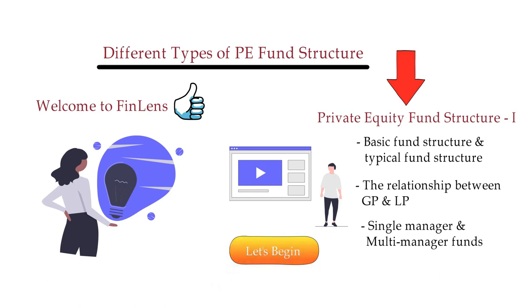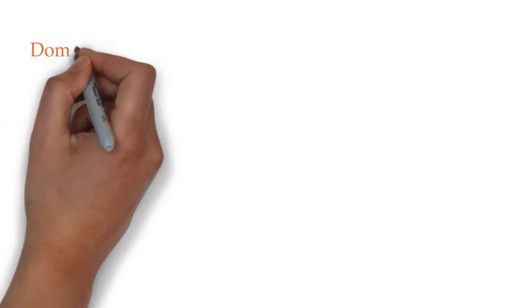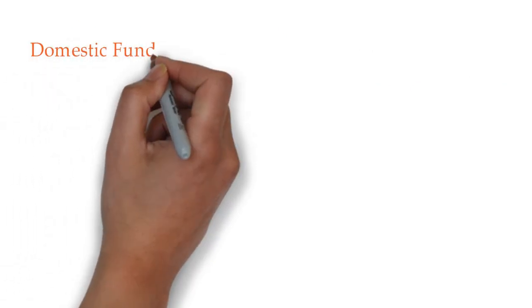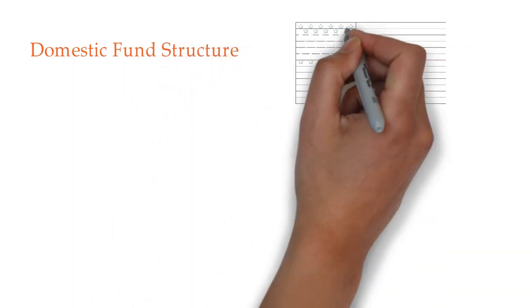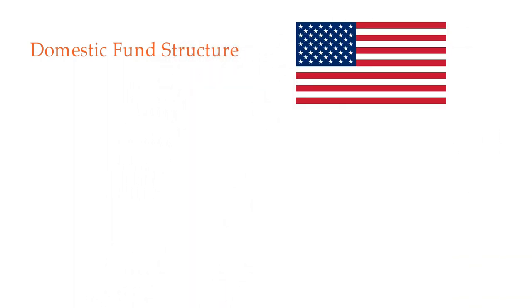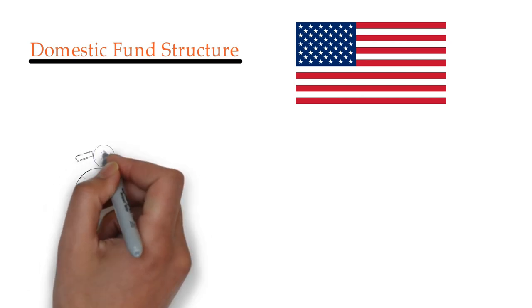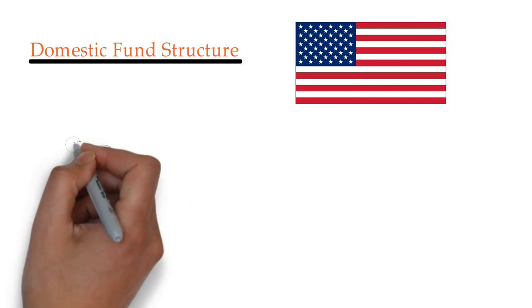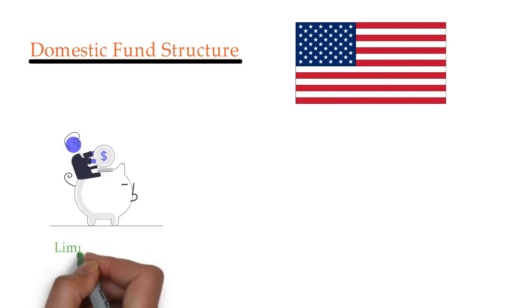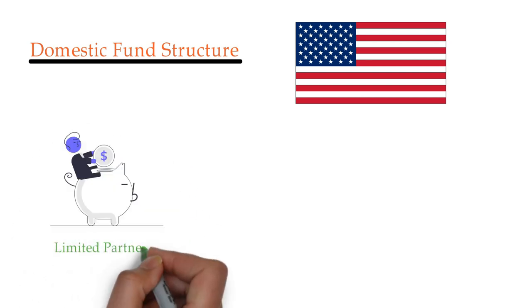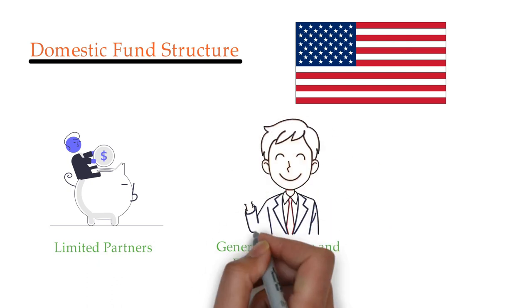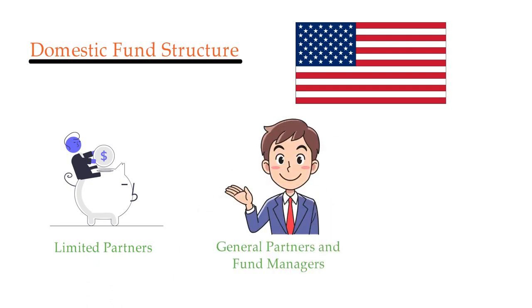So let's begin. One of the very basic structures is the domestic fund structure. In this structure, limited partners are domiciled in the US only. A domestic investment fund structure is typically comprised of the following entities: limited partners, general partners, fund managers, and underlying investments.